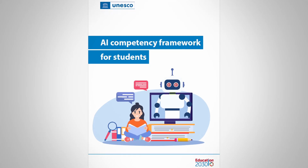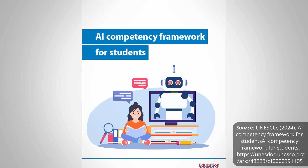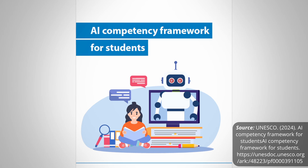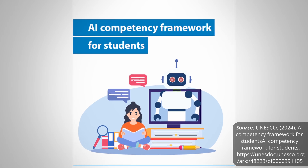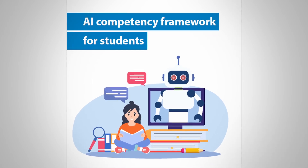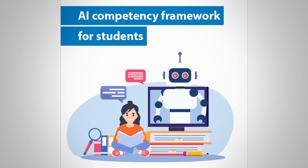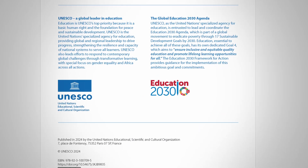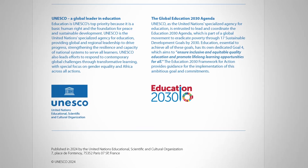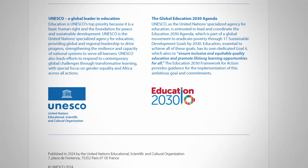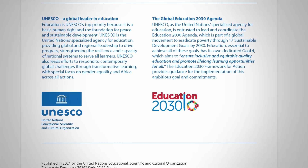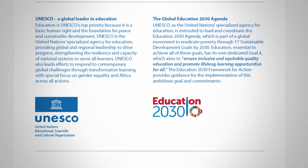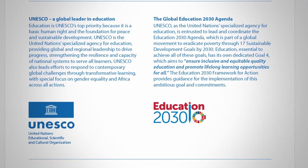I'm really happy to announce that here recently a UN document came out. This is from UNESCO, and it's entitled AI Competency Framework for Students. This is really powerful because this is coming from UNESCO — from their research, from their observations — and this deals with the UN Specialized Agency for Education. The idea is that they're trying to coordinate an overall Education 2030 agenda.